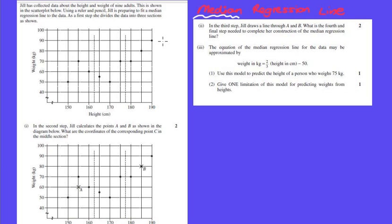Let's read the question first. Jill has collected data about the height and weight of nine adults. This is shown in the scatterplot below. Using a ruler and pencil, Jill is preparing to fit a median regression line to the data. As a first step, she divides the data into three sections as shown.